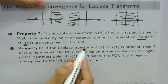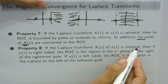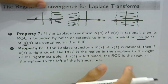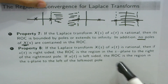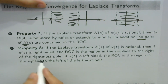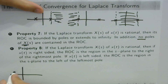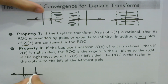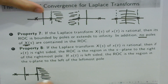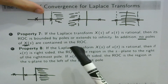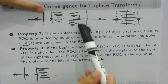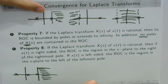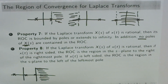Property 8 states that if X(s) is rational and X(t) is right-sided, the ROC is the region to the right of the rightmost pole. If there are multiple poles, the rightmost pole determines the boundary. Conversely, if X(t) is left-sided, the ROC is to the left of the leftmost pole. These eight properties help us understand Laplace transforms and their convergence.